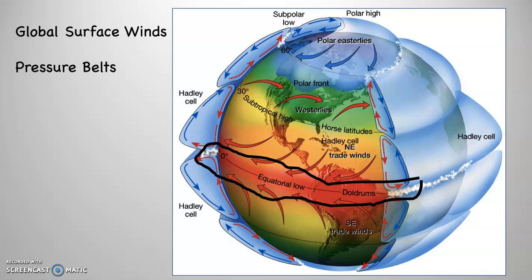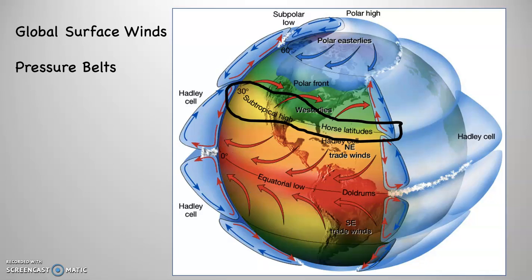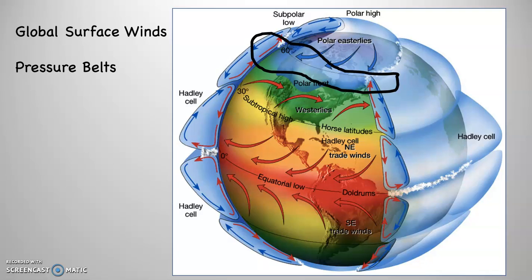Let's do a quick recap. Let's take a look at the pressure belts. Remember, there are seven global pressure belts. We've got the equatorial low that centers on the equator, the subtropical highs that center on 30 degrees north and south. There's the subpolar lows that are at 60 degrees north and south, and then the polar highs that are at 90 degrees north and south. The equatorial low and the polar highs are thermally induced pressure belts. The subtropical highs and the subpolar lows are dynamically induced pressure belts.